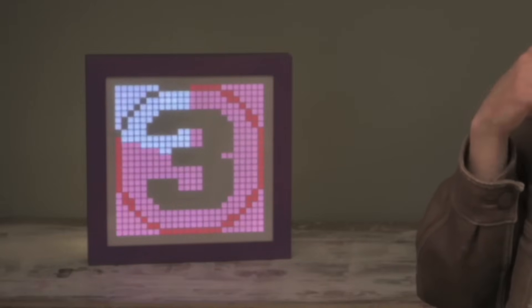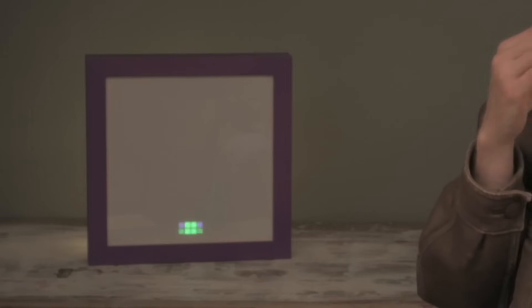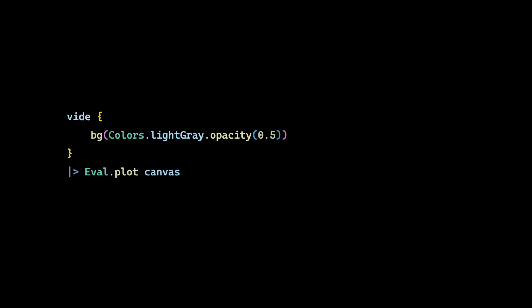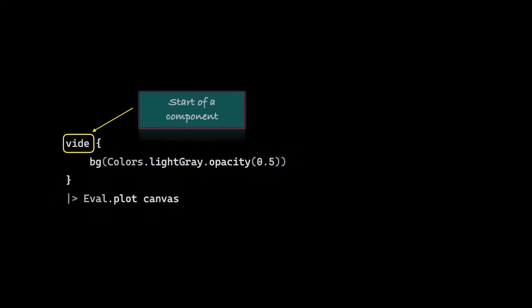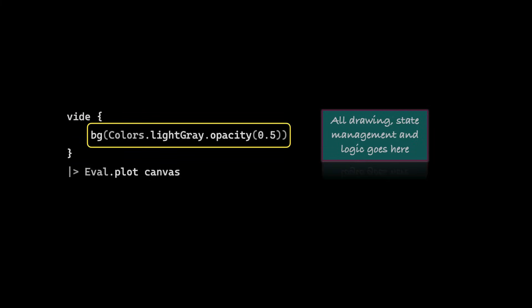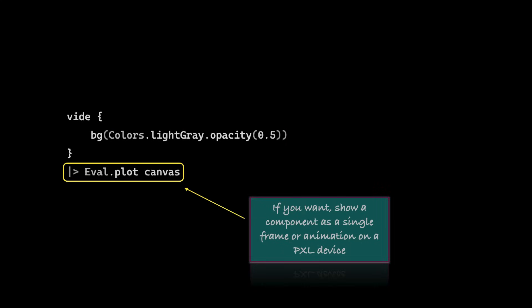We want that animation, so we divide it into steps and achieve the final result step by step. The first thing we do is draw a static background. The code defines a computation inside this white block. Inside the computation, it says: draw a background using the BG function, and we pass a brush — in this case a color — to it. Then we evaluate that computation exactly one time using eval.plot. What comes out is a 24x24 color array that is sent to the device or simulator.